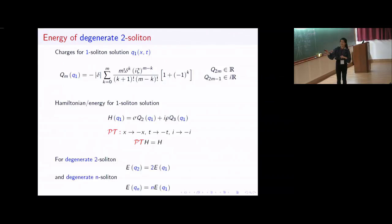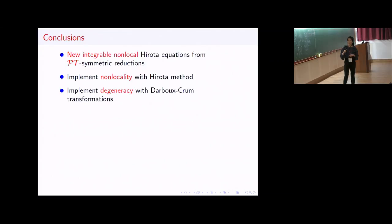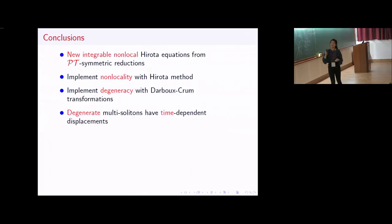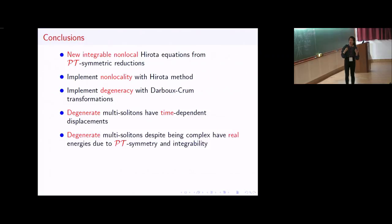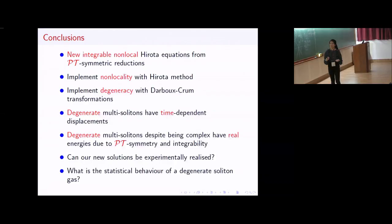In conclusion, today I've shown you how to construct new integrable non-local Hirota equations from PT symmetry reductions, how to implement non-locality with the Hirota method, how to implement degeneracy with Darboux-Crum transformations, and that degenerate multi-solitons have time-dependent displacements. Despite being complex, they have real energies due to PT symmetry and integrability. Open questions include whether we could observe these solutions experimentally and investigating the statistical behavior of a degenerate soliton gas. Thank you for listening.